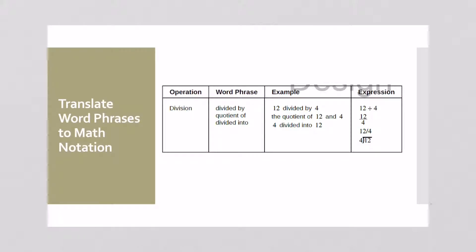There's several ways that you can say division. You can say divided by. You can say quotient of, or the quotient of 12 and 4. Or 4 divided into 12. Now you have to be careful with that last one because that implies that you have to reverse the order. 4 divided into 12 really means 12 divided by 4. So be really careful with that.